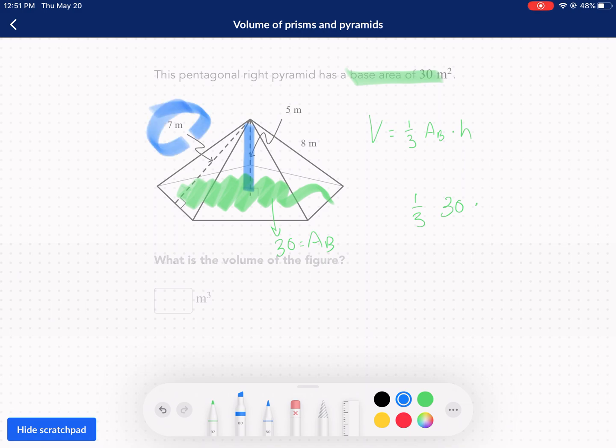Now you use the seven for, that's the slant height and you're going to use that for surface area, but not for volume. For volume, we want to know how tall is this thing, what is the altitude? So we're going to use the five there. Five is our height.